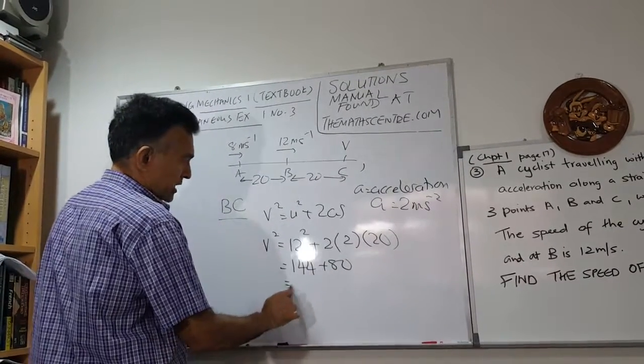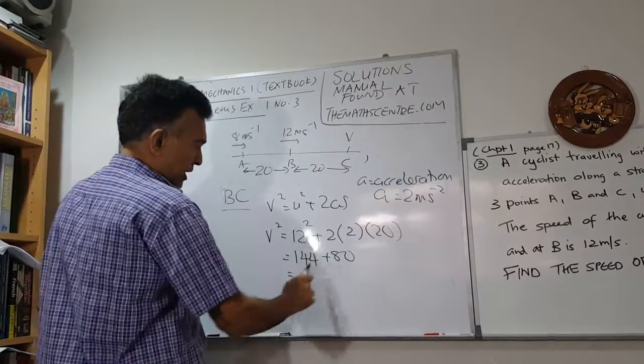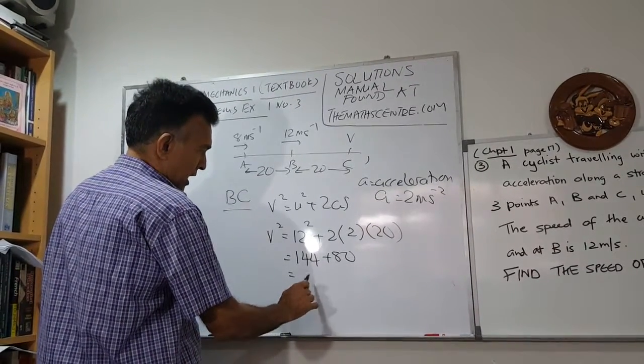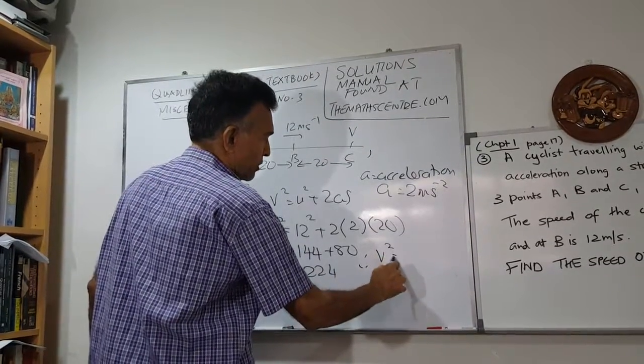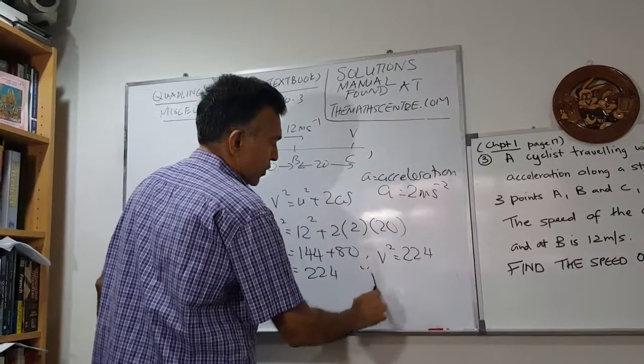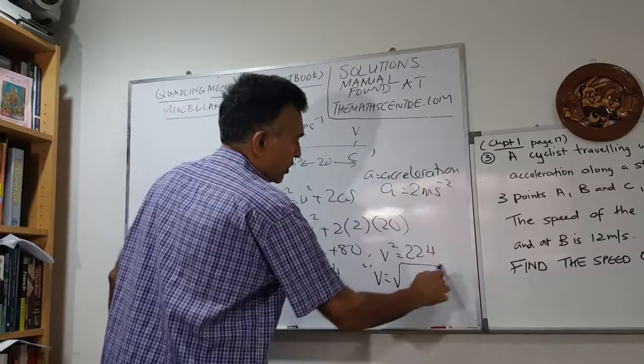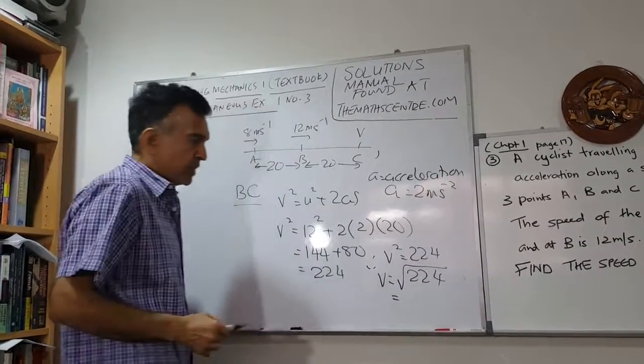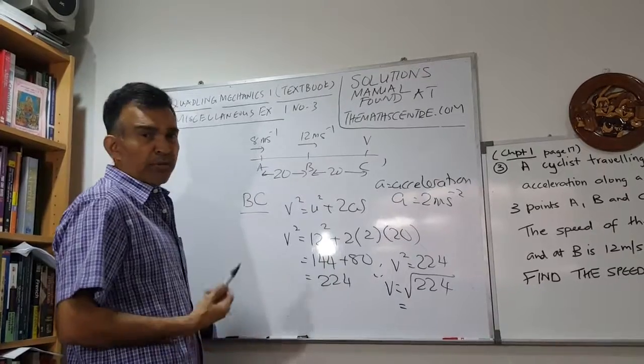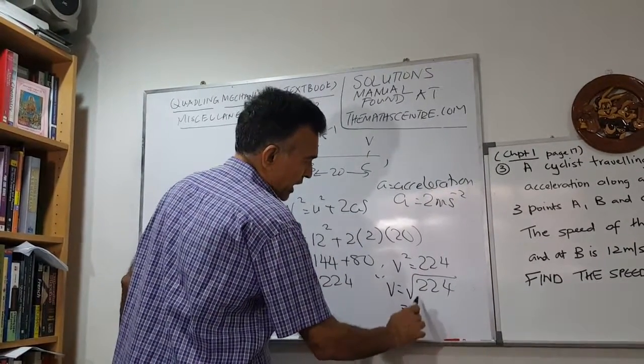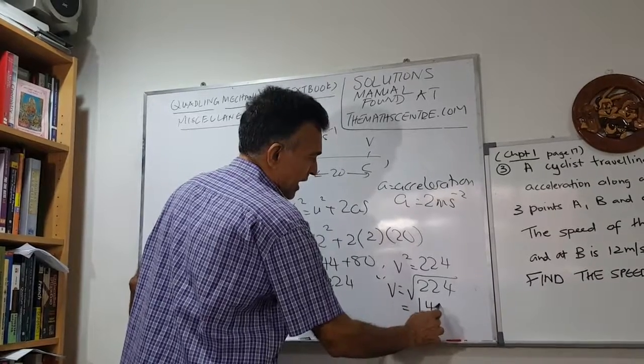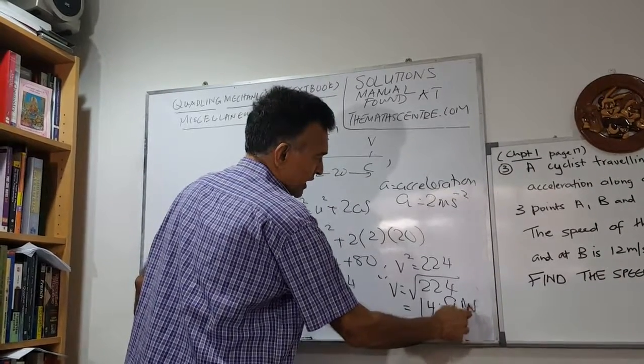This comes to 144 plus 80, which is 224. Therefore, we have v² = 224, so v will be the square root of 224, which is about 15 meters per second. Using a calculator, you'll get about 14.9 meters per second, or you can just take it as 15 meters per second.